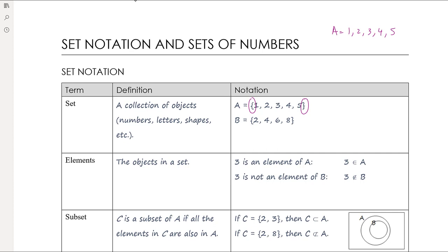We could also have a set C which is the set of x values where x is bigger than 0 — so the set of all numbers greater than 0. Before the semicolon, we describe what sort of things are in the set. Another example might be the set of coordinates where y equals 2x plus 1, meaning all the coordinates that fall on that line. Curly brackets are key for defining a set.